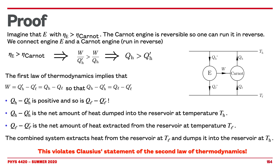Students sometimes ask: what about the work? We don't account for it separately because we are considering the two systems together as one black box — what matters is what the system does to its surroundings. The system as a whole is extracting heat from the low-temperature reservoir and the sole effect is providing that heat to the hot reservoir, which violates Clausius's statement. Therefore, an engine more efficient than Carnot is impossible. The Carnot engine is the most efficient engine possible.